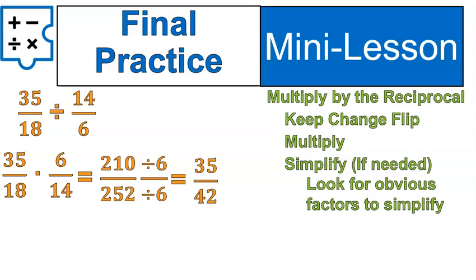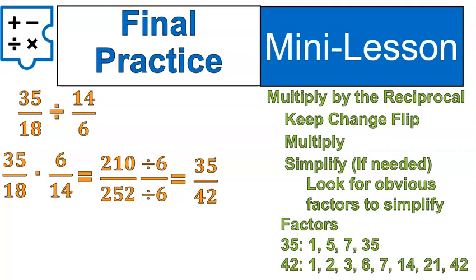When we divide by 6, we get some very reasonable numbers. A 35 and a 42. Which means, at this point, I can list my factors. Find my greatest common factor. And, simplify. Just like I did in the beginning.